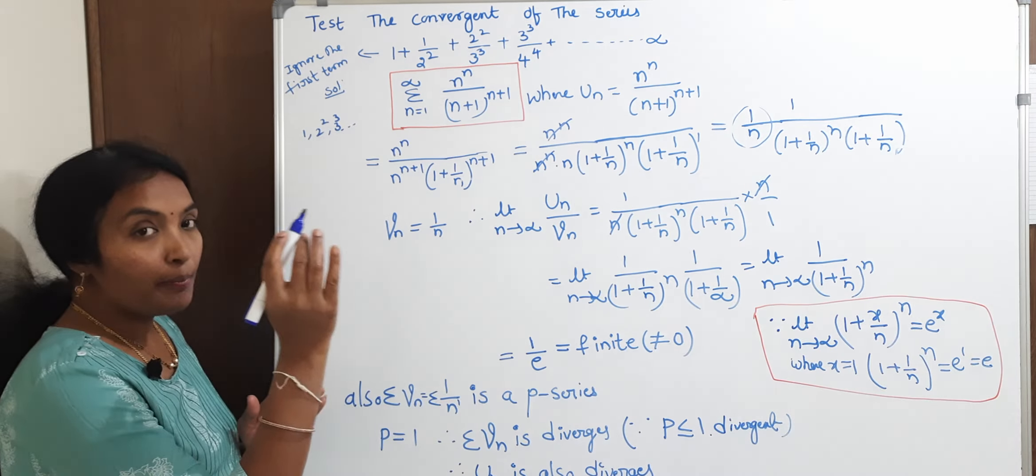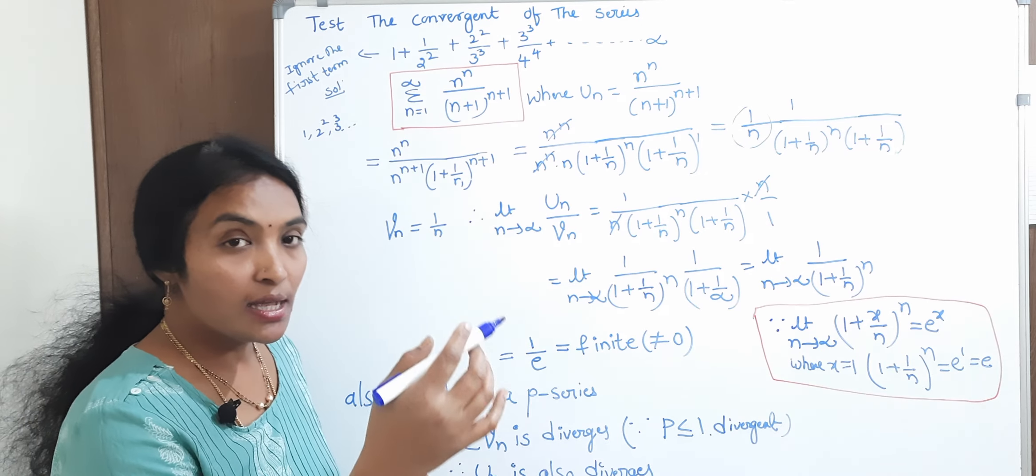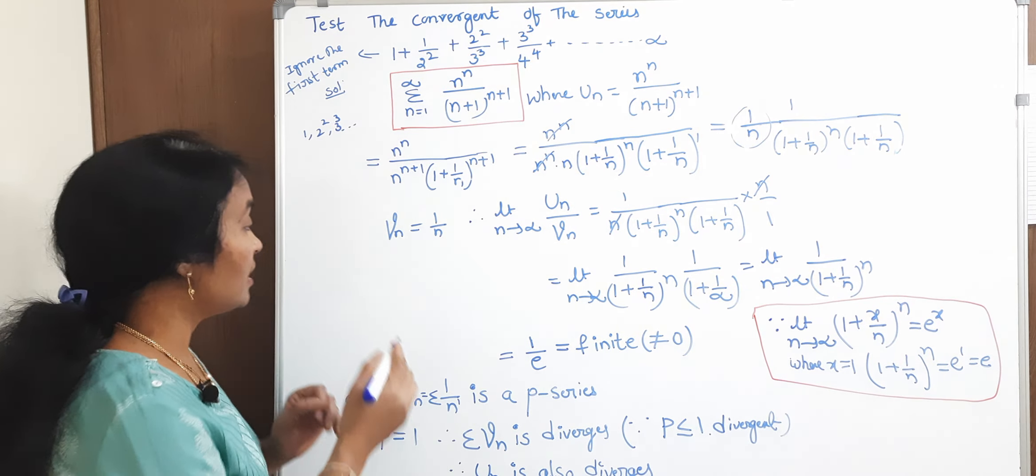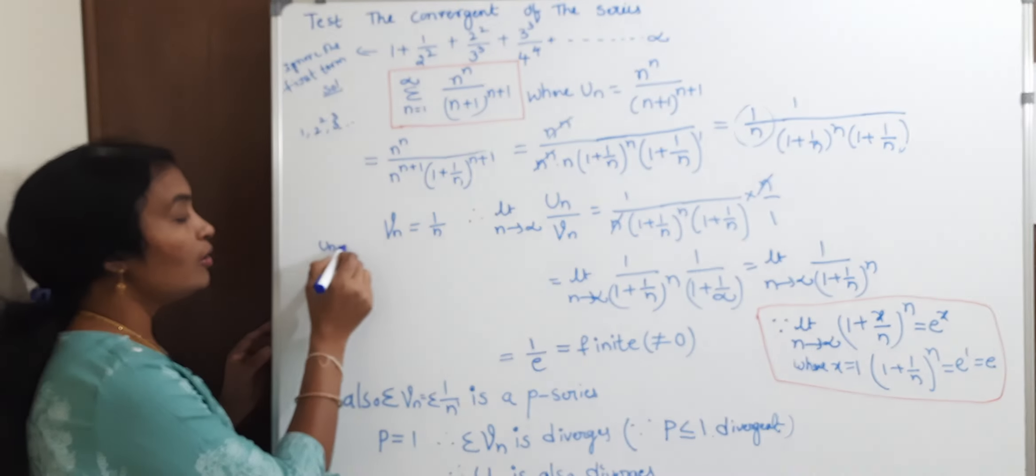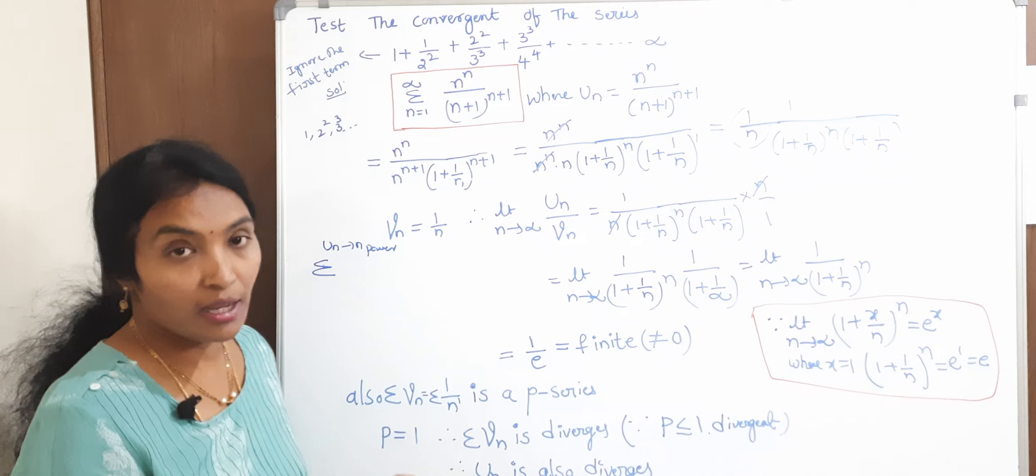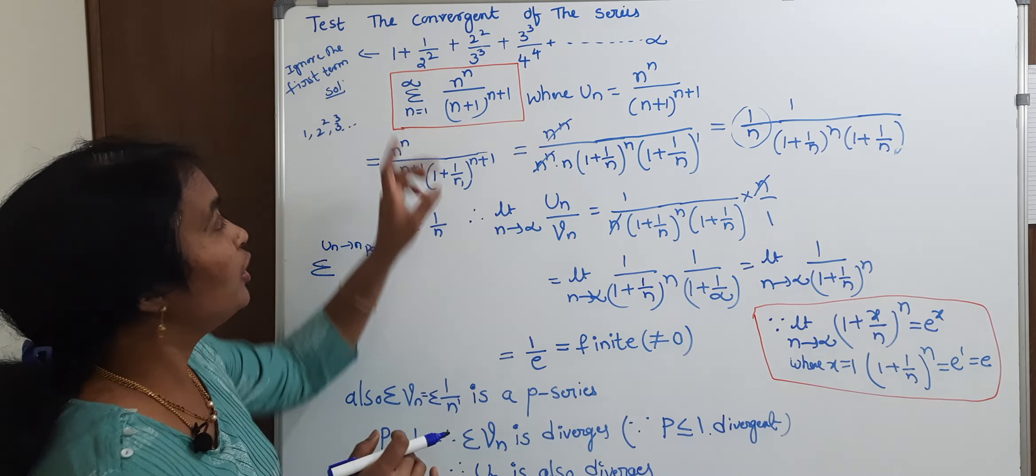First of all, comparison test, I will repeat the last class just for one minute. What is comparison test? V_n, U_n, N is equal to 1 to infinity. U_n law, N powers are finite powers of N in the numerator and the denominator.